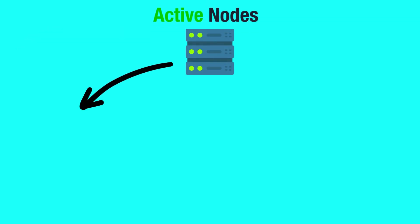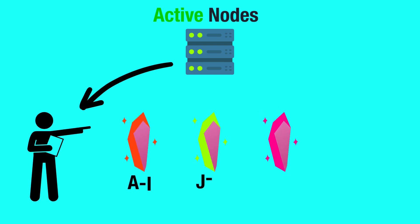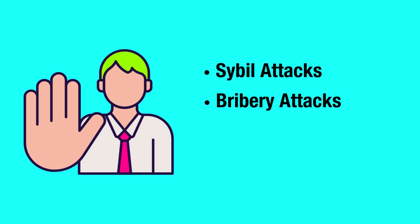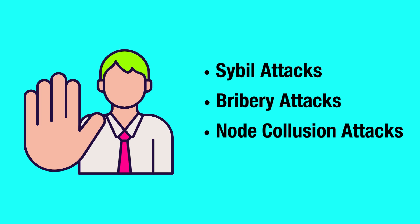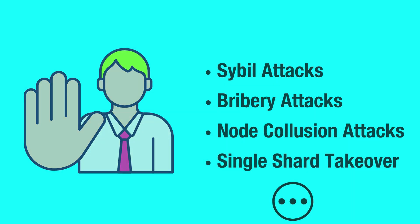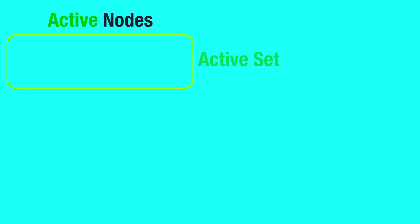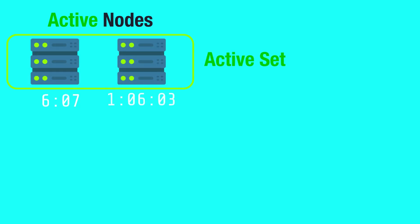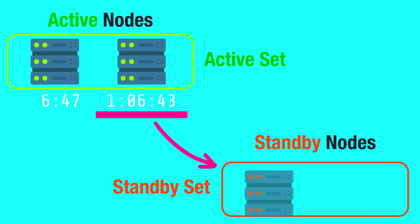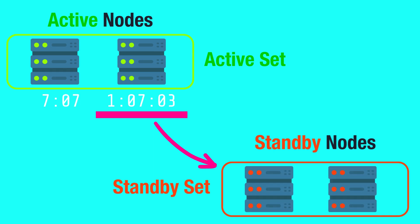Active nodes are assigned to shards and address ranges that they cannot pre-select or determine in advance. This is to prevent attacks such as Sybil attacks, bribery attacks, node collusion attacks, single-shard takeover attacks, and others. Active nodes participating in the active set for the longest time are rotated out and reassigned to the standby set, becoming standby nodes once more, with new standby nodes taking their place in the active set.